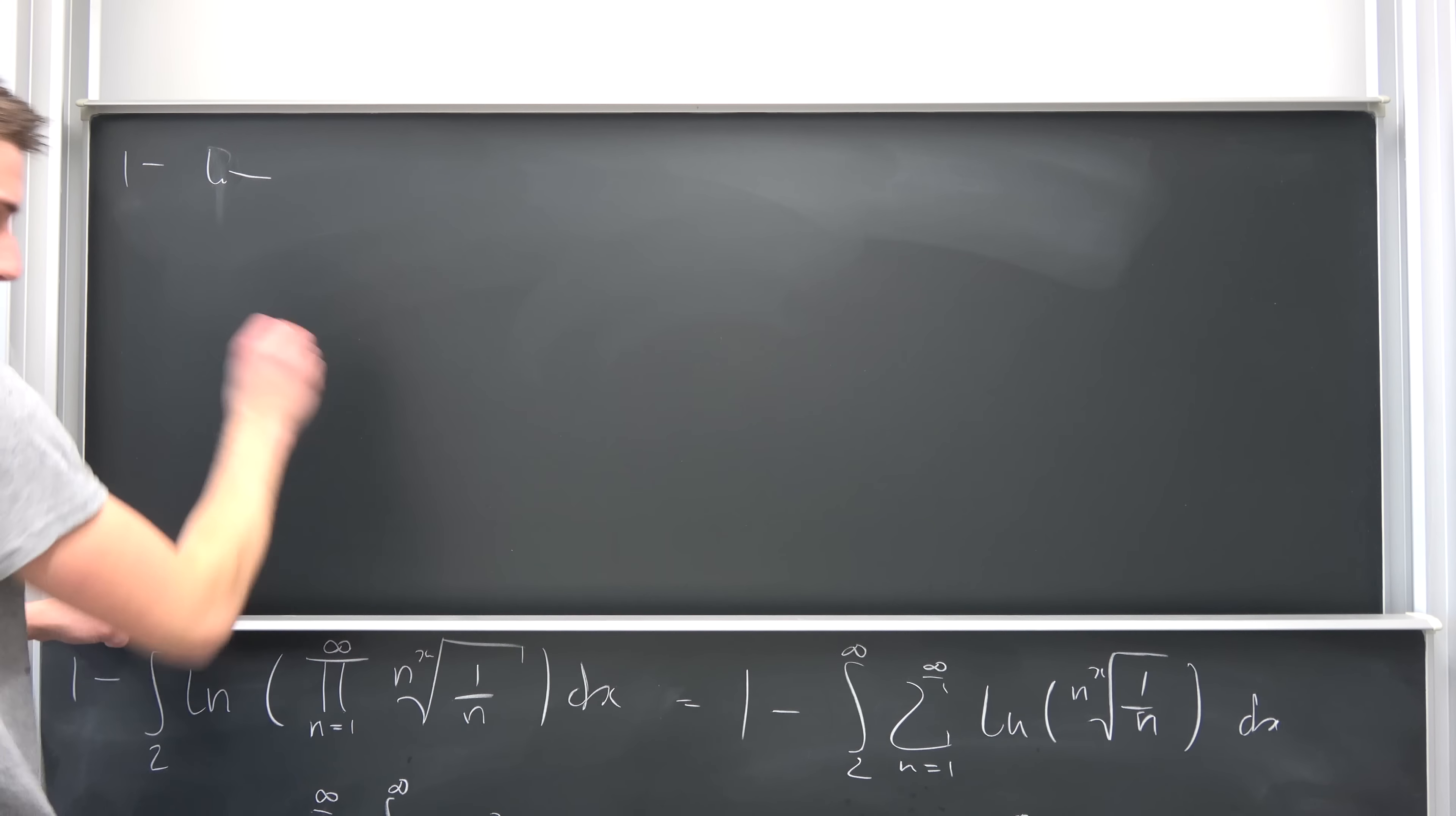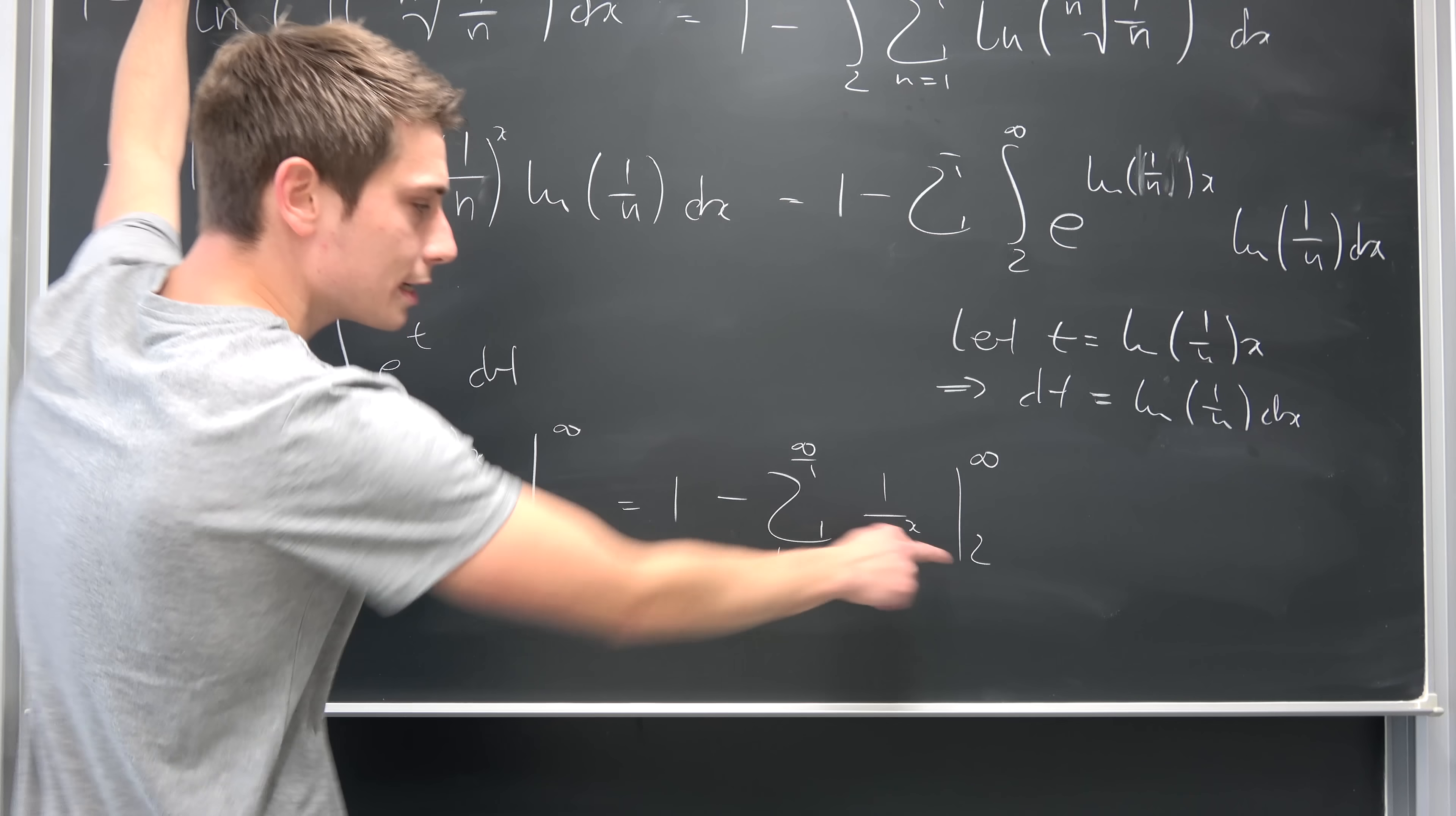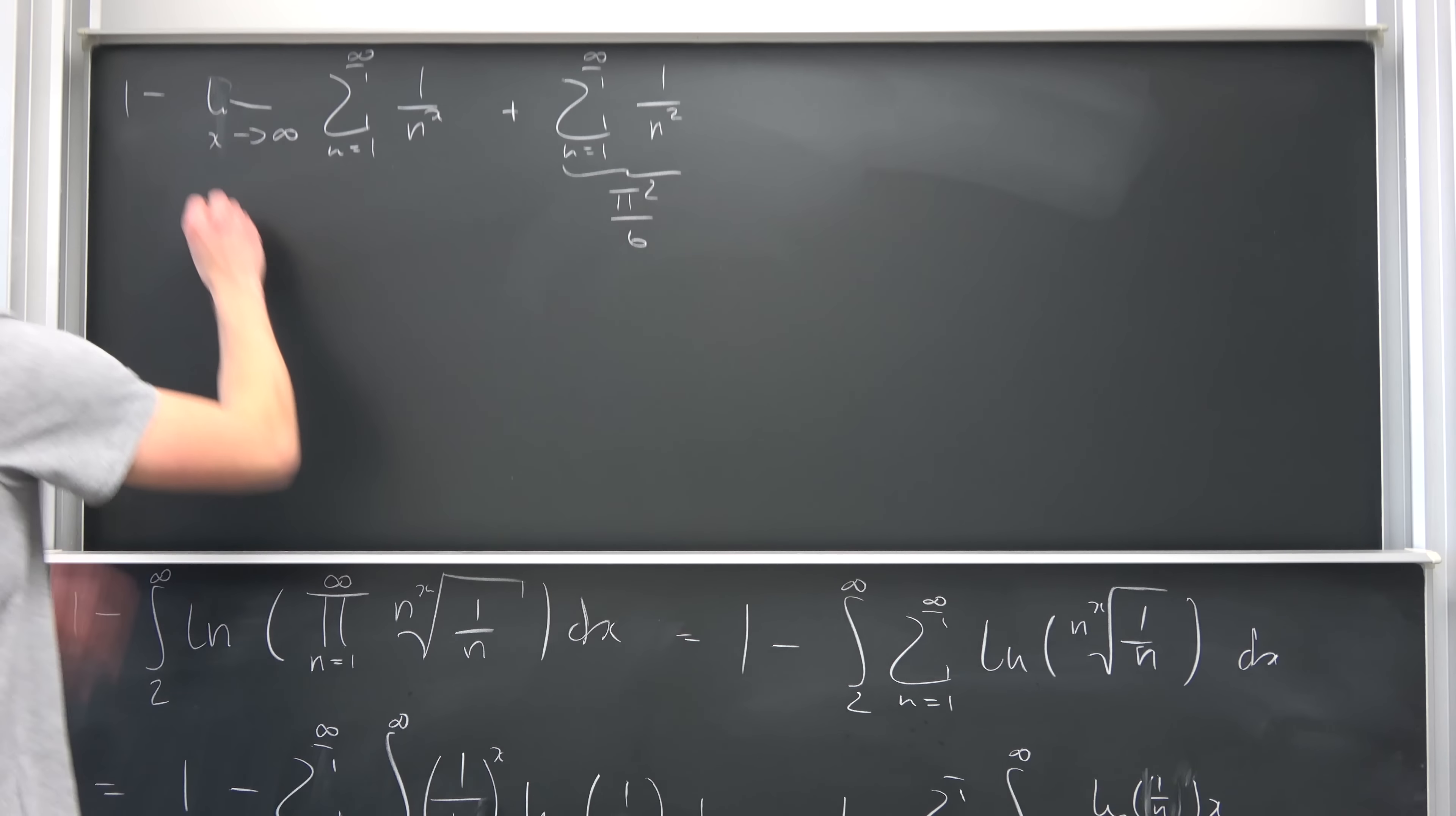So now we have 1 minus the limit as x approaches infinity of the infinite summation from 1 to infinity of 1 over n to the x power. Negative and negative is going to become positive right here. So you see, then we have plus the infinite summation from n equals 1 to infinity of 1 over n squared. Okay, we have calculated this before. This is nothing but the Basel problem, so this is pi squared over 6. And what is this right here?